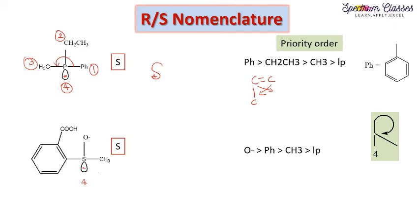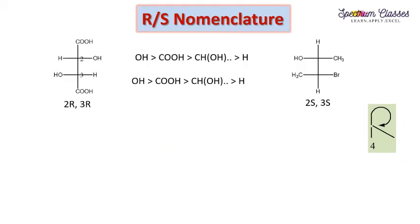Similarly, for another molecule with a lone pair as the fourth priority group, priorities are assigned to the remaining groups. Moving 1→2→3 gives an anticlockwise rotation with the fourth priority at the bottom (vertical line), giving S configuration. One more thing to note: when sulfur is present as S with a double bond (S=), RS nomenclature is still applied in the same way for that double-bonded sulfur.